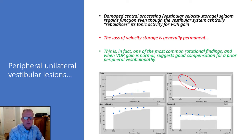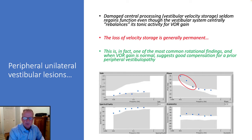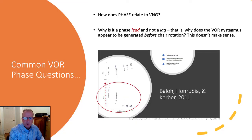Even as we recompensate for central gain, we don't necessarily repair the central velocity storage mechanisms. So it's actually a pretty common finding in the chair — we'll often see it after compensation has occurred: normal gain, fairly normal symmetry, but you'll always see this low-frequency VOR phase dysfunction. It's almost always an indicator of a previous vestibular lesion.